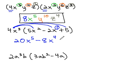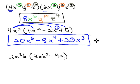Finally, 4x cubed times 5, 4 times 5 is 20, and we still have the x cubed with no extra variables. We end up with our final product, 20x to the 5th, minus 8x to the 4th, plus 20x to the 3rd.